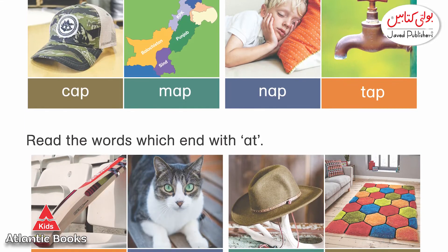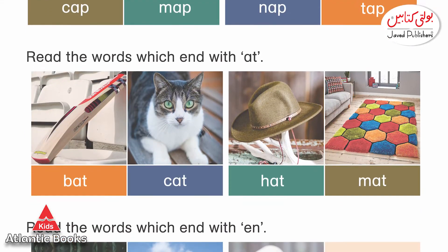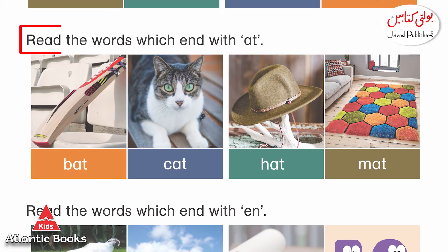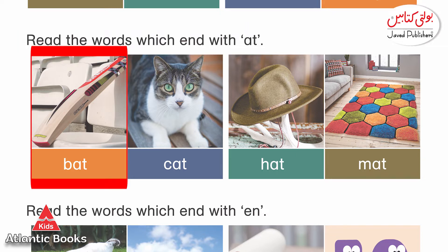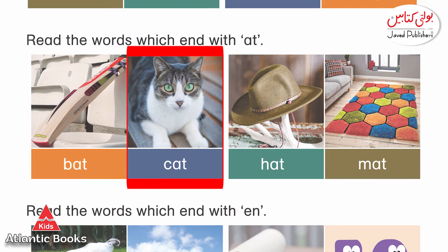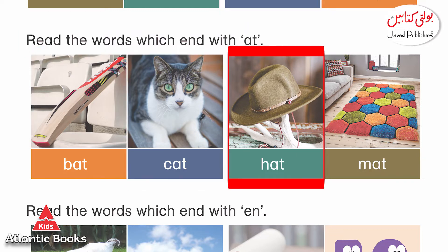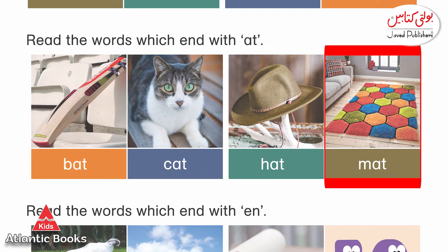The next word is 'at', which makes the sound 'at'. The words are: bat, cat, hat, mat.